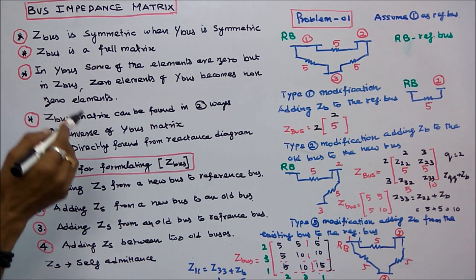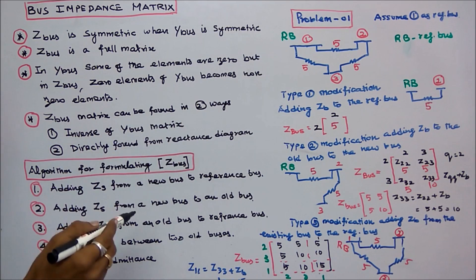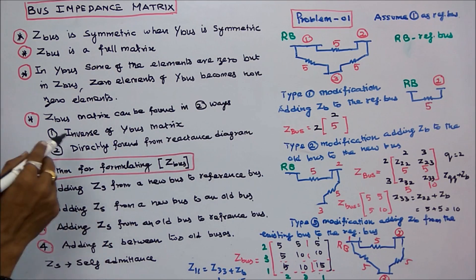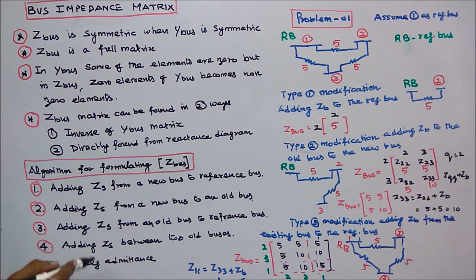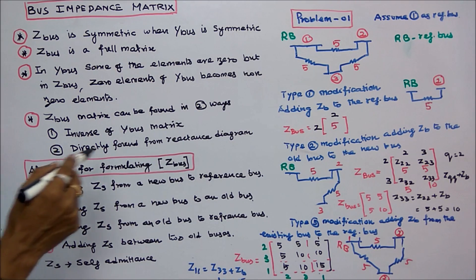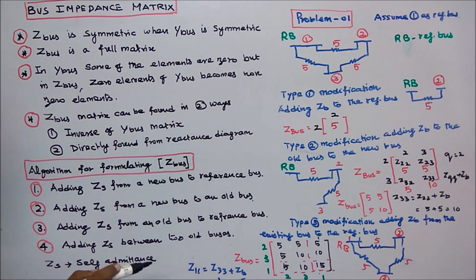Bus impedance matrix can be found in two ways. One is the inverse of Y bus matrix. The second is directly found from the reactance diagram.